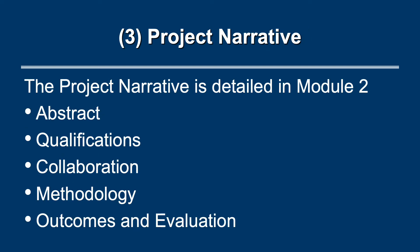Third is the project narrative form. This form is discussed in detail in Module 2. It is a five-part form where you provide the abstract, qualifications of the organization, collaboration, methodology, and the outcomes and evaluation of the project.